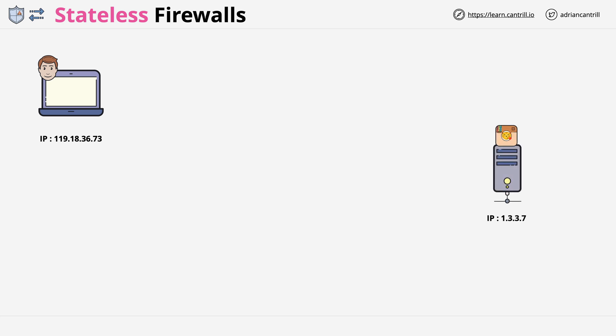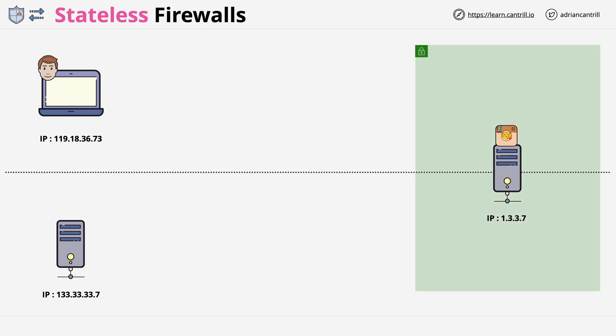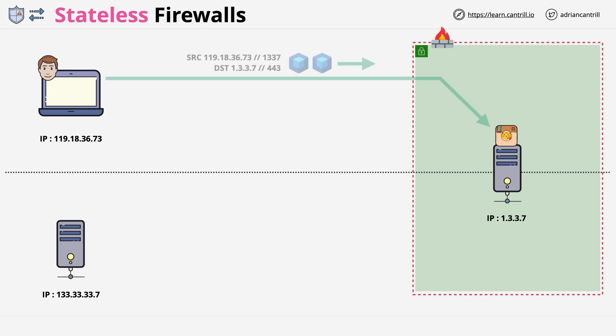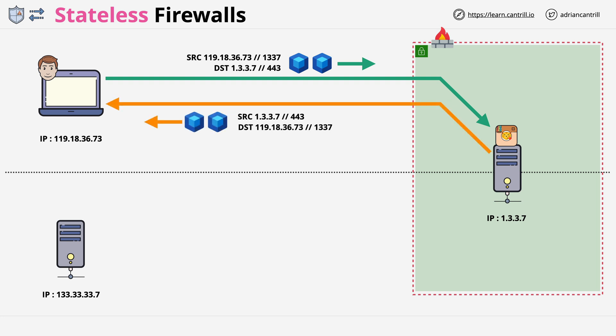Let's look at a more complex example. We still have Bob, his laptop, and the catagram server, but now we also have a software update server. The catagram server is inside a subnet protected by a firewall — specifically, a stateless firewall. A stateless firewall doesn't understand the state of connections, meaning it sees the request from Bob's laptop to catagram and the response from catagram back to Bob's laptop as two individual parts. You need two rules — one inbound for the request and one outbound for the response.